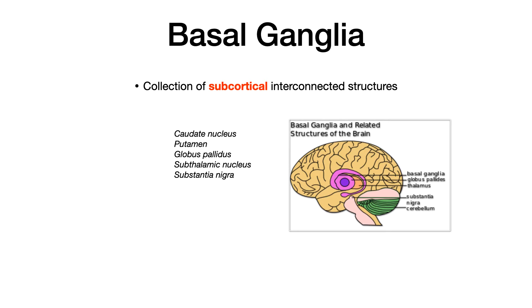Before we get into the nitty-gritty details, let's begin with an overview of what the basal ganglia is. The basal ganglia is a collection of subcortical interconnected structures. When something is subcortical, it means below the cortex. The outer peripheral part of the brain — the frontal cortex, parietal cortex, temporal cortex — is all cortical. Anything deep to that is subcortical, and that's what we're talking about with the structures that comprise the basal ganglia.